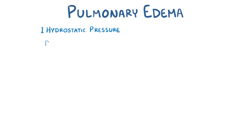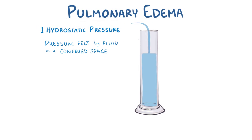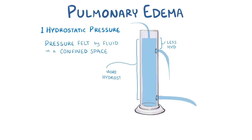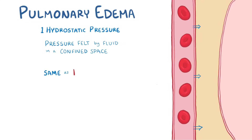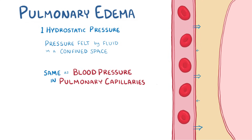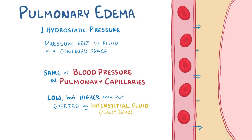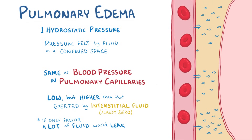Hydrostatic pressure refers to the pressure felt by fluid in a confined space, pushing the fluid out of that space. In the interstitial space, it's the same thing as the blood pressure in the pulmonary capillaries, and because the pulmonary circulation is a low pressure system, the hydrostatic pressure is pretty low, but it's still higher than the hydrostatic pressure exerted by the interstitial fluid of the lungs, which is almost zero. So, to be clear, if hydrostatic pressure was the only factor involved, a lot of fluid would be continuously leaking out of the pulmonary capillaries and into the lungs' interstitial space.